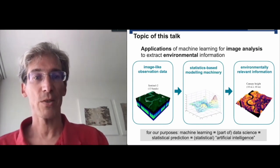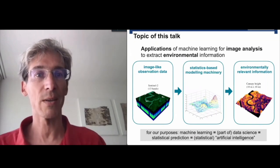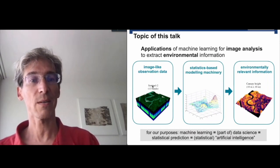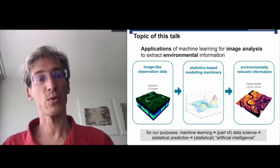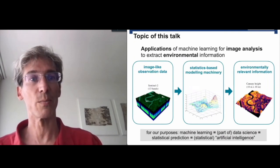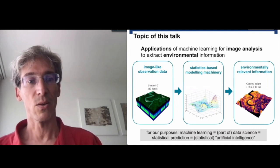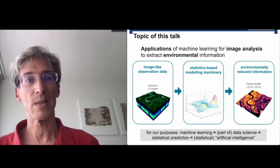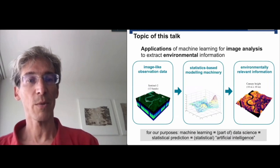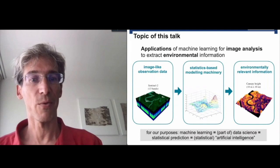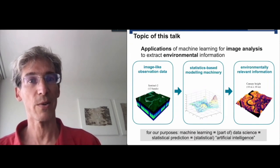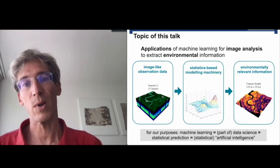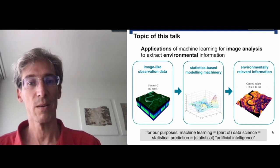So the topic is basically applications of machine learning for image analysis - image maybe in a slightly broader view - to extract environmental information. We have some sort of image-like data, could be multi-spectral or hyperspectral, could be LiDAR. This image-like observation data goes into statistically motivated modeling machinery. We're not trying to apply first principles physics, but to statistically find patterns and predict information that is environmentally relevant.